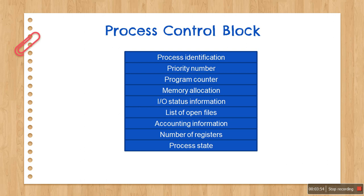Next is the I/O status information, which maintains information related to the open files, list of I/O devices, and all devices allocated to a process. Then you have the list of open files — if a process uses a number of files for operation, the OS has to keep track of all the open files by the process, and this is where that list is kept. Then there is accounting information, which keeps track of all resources allocated to the process — at what time they were allocated, how many resources are allocated, and how long the process will take to execute. Then you have the number of CPU registers allocated to the process for carrying out its execution.